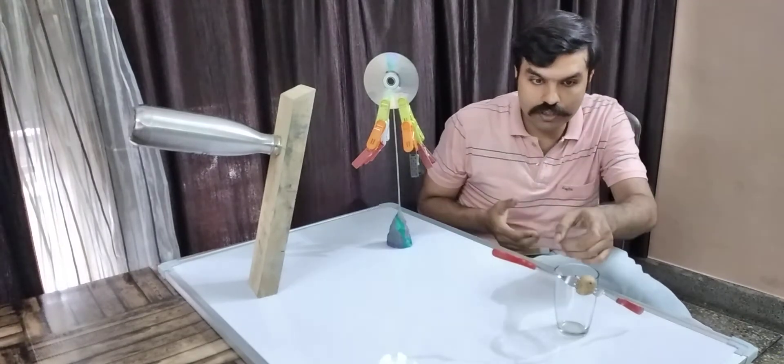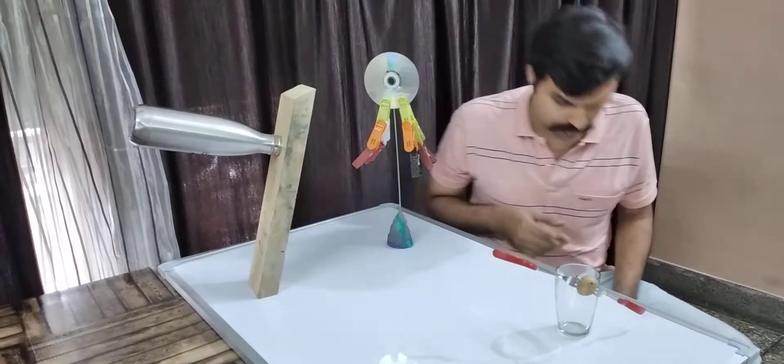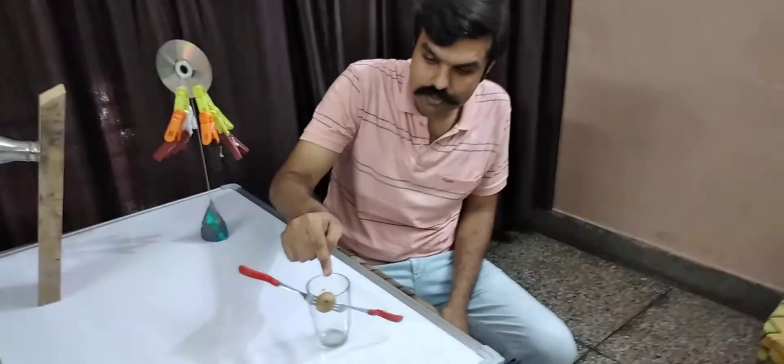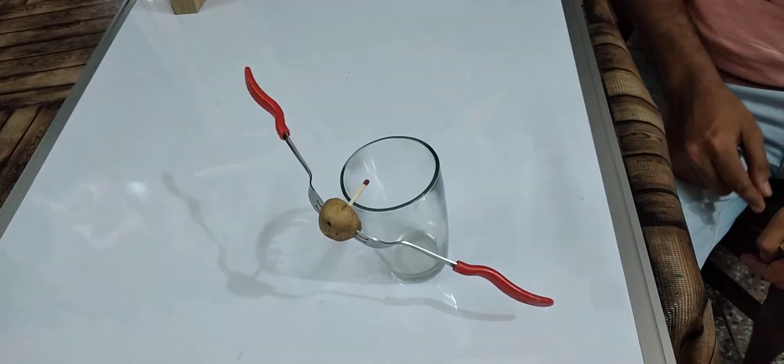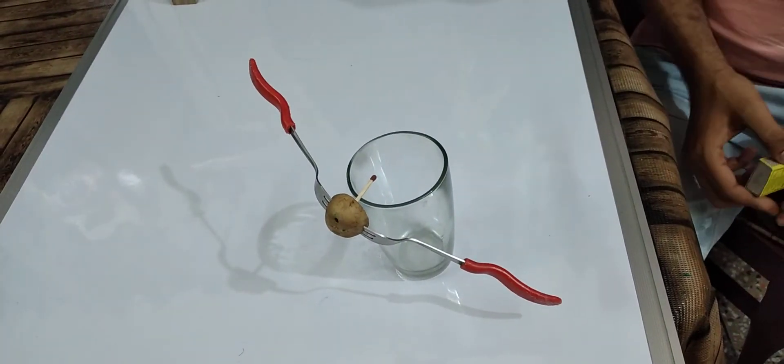You see this arrangement. This arrangement is an arrangement of two forks. It is balanced on a matchstick against the edge of a glass.